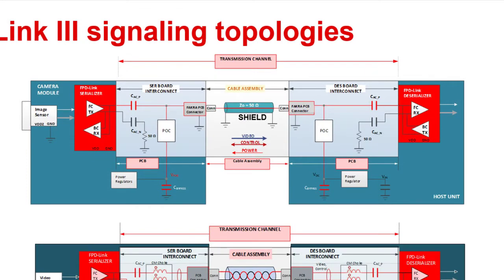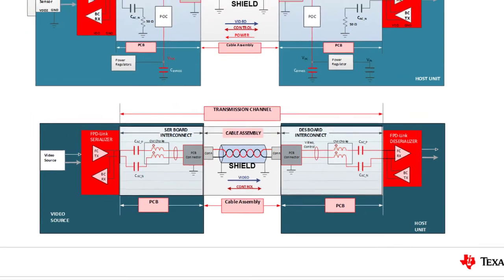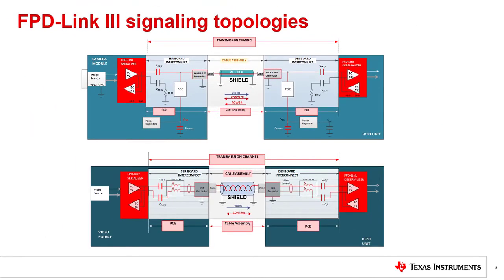In the top diagram I'm showing the single-ended signaling topology with the coaxial cable. Power over coax, or POC, is used to deliver power onto the same coaxial cable that carries high-speed video data and bidirectional control data. In the bottom diagram I'm showing the differential topology. A shielded core twisted pair cable connects the serializer to the deserializer. Now let's zoom in on each of these signaling topologies used by FPD-Link for a closer look.